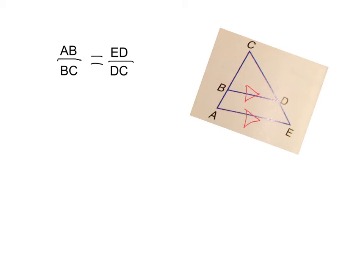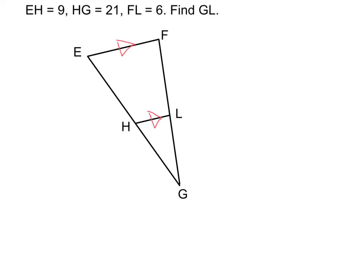Let's do some examples. Here we've got a couple triangles right here and right here. Notice the parallel lines. We're given that EH equals 9, HG equals 21, FL equals 6. We want to find GL. First, let's label what we know.